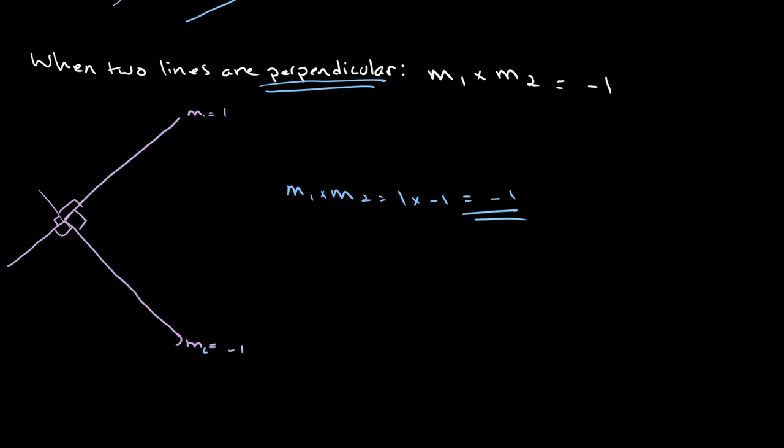Now, for perpendicular bisectors, let's write this up here. Let's say that we have two points. This is point P, and this is point Q.